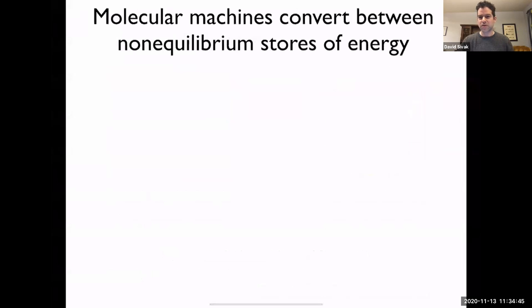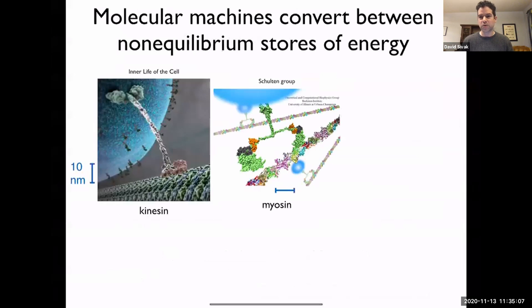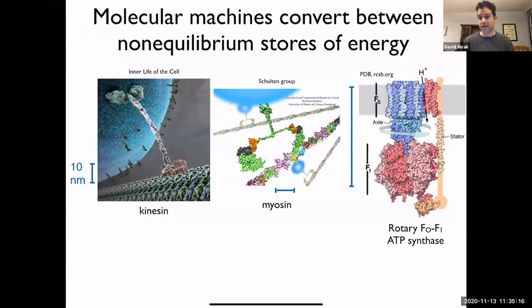At the molecular level, the way that they essentially implement this program is through molecular machines, so protein complexes that convert between different forms of energy. I'd like to suggest we really should think about them at some fundamental level as converting between different non-equilibrium stores of energy or of free energy. Some of my favorite examples include transport motors like kinesin and myosin, and my favorite motor by a long shot is ATP synthase, an ingenious rotary motor that creates ATP.